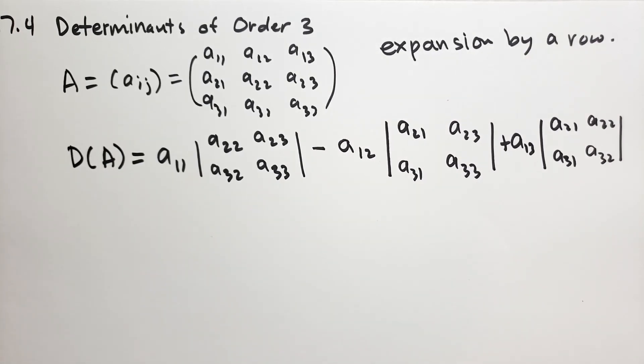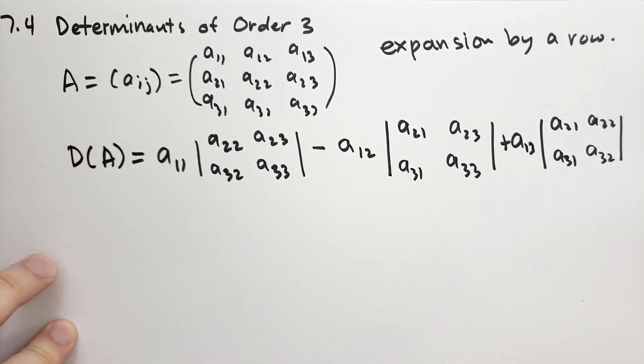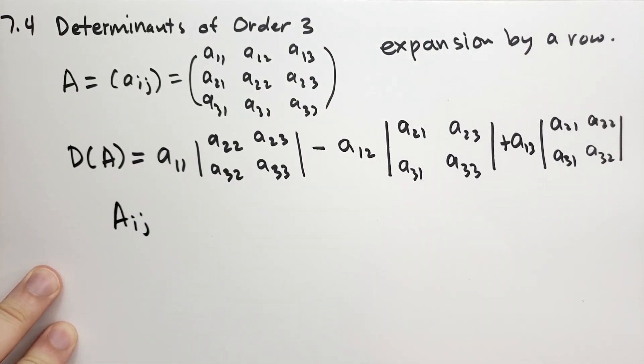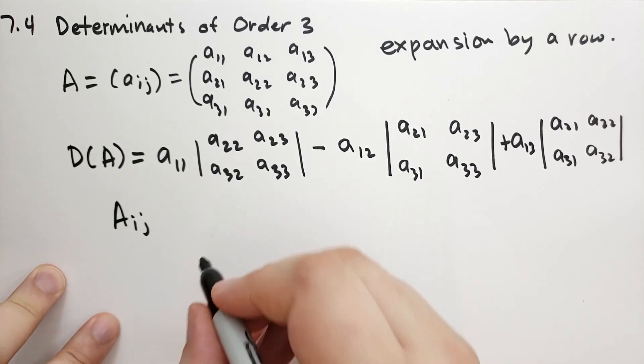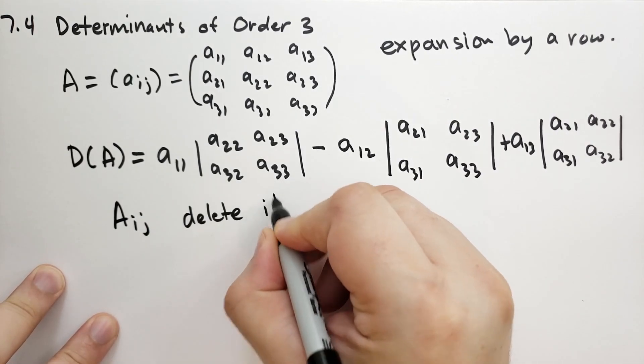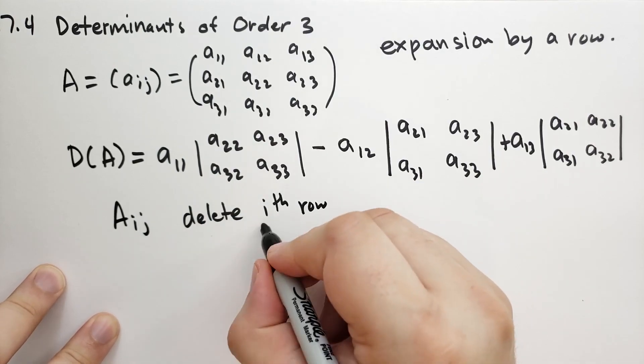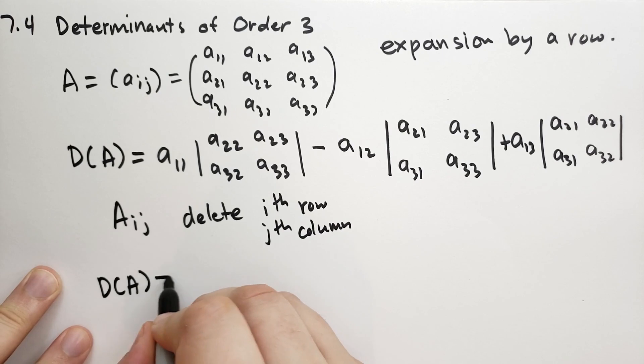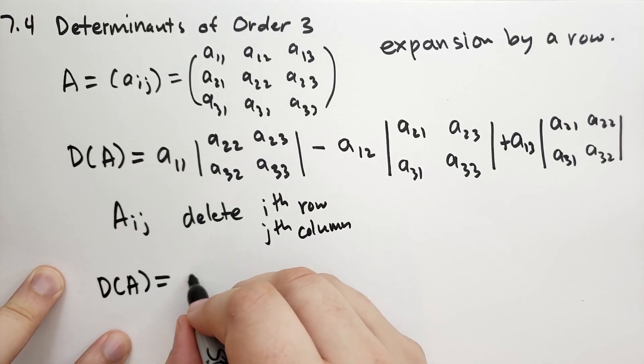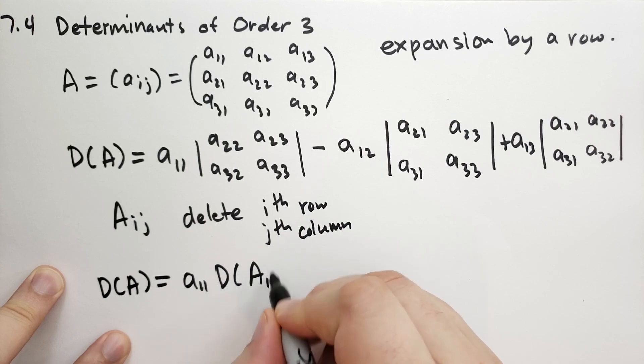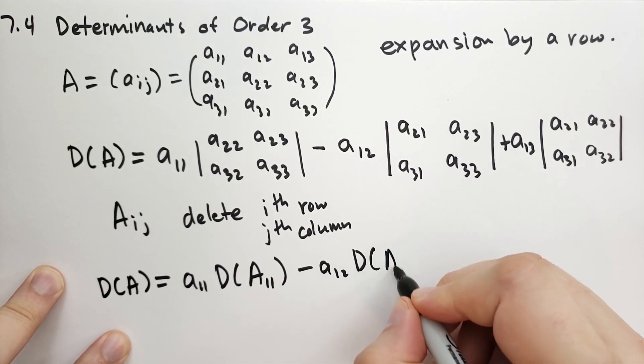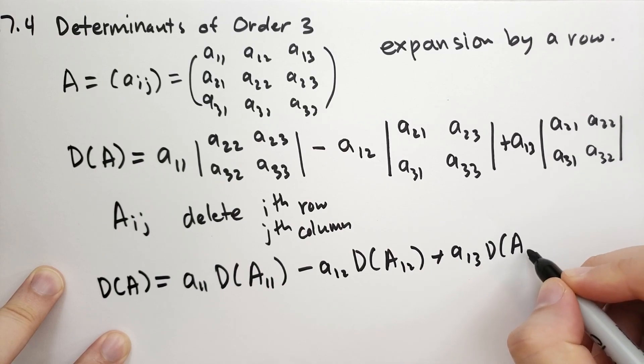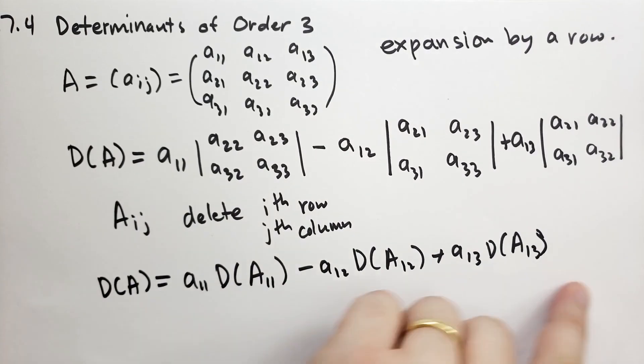Again, we use vertical bars around the matrix to describe the determinant. We can also, if we say that capital A_ij is the matrix obtained by A from deleting the i-th row and the j-th element, so we delete the i-th row and the j-th column. So we can also write out the determinant this way. This is equal to A_11 times the determinant of capital A_11 minus A_12 times the determinant of capital A_12 and then plus A_13 times the determinant of capital A_13. That's another way to think of it.